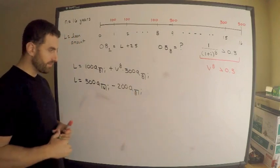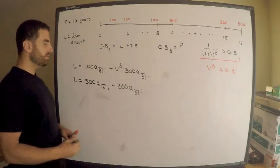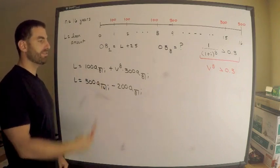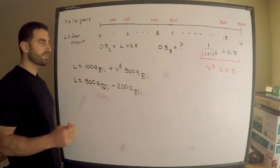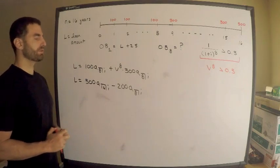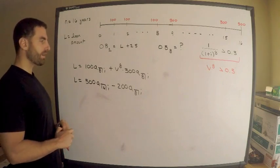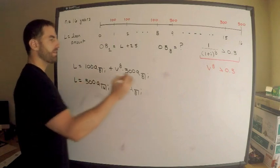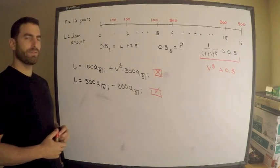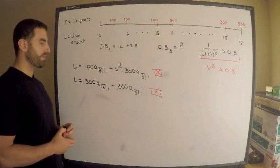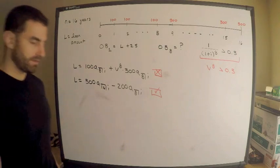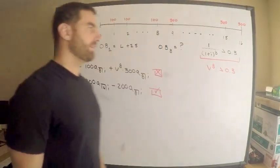I urge you to verify these two representations are equivalent. The reason to know both is that sometimes one approach is more efficient than the other. In this problem, I'll go with the second method — 300·a(16,i) minus 200·a(8,i) — as it will be more efficient here.